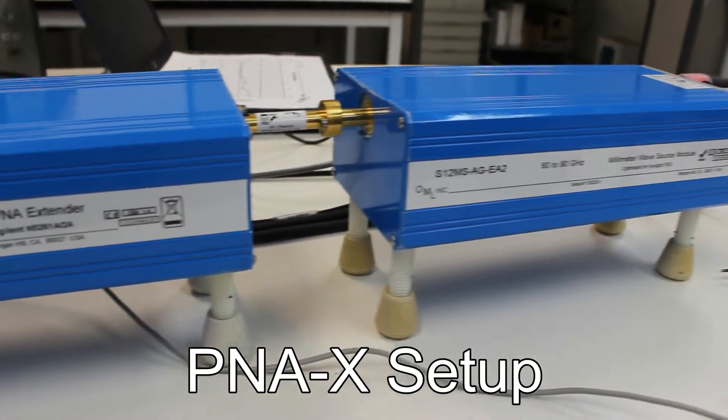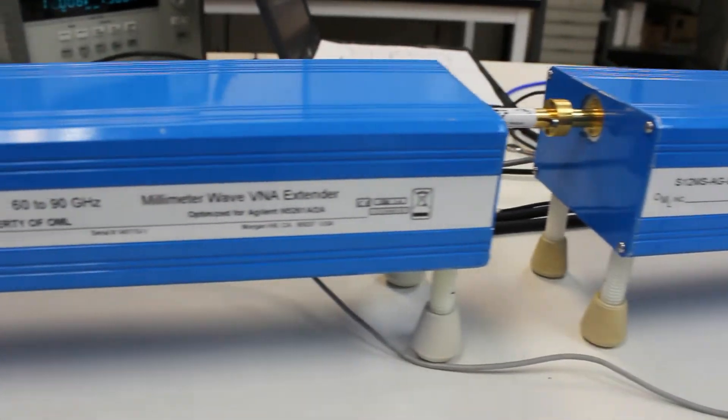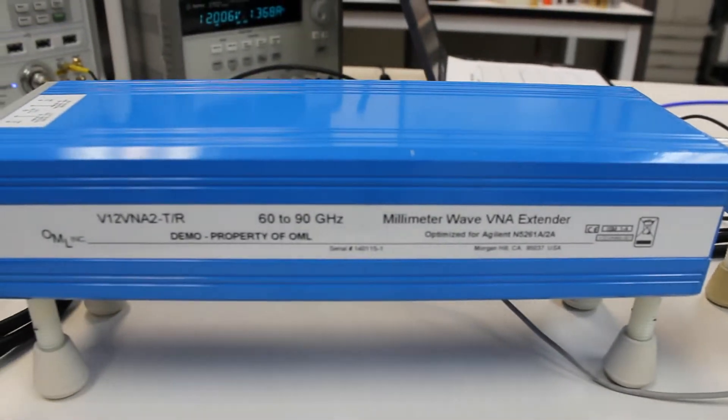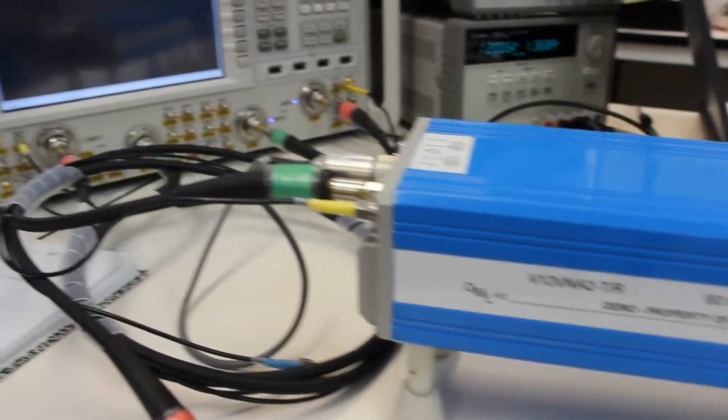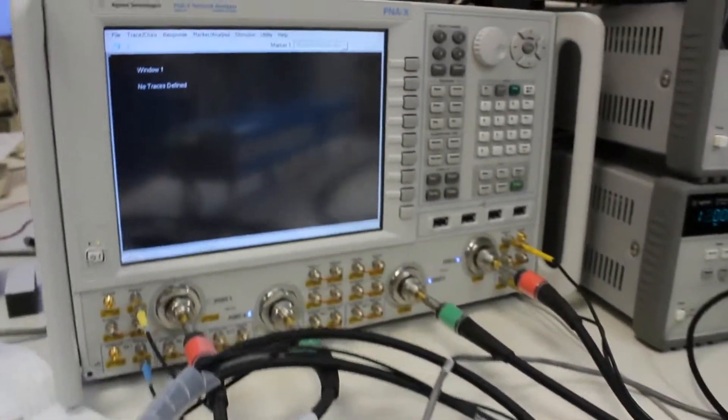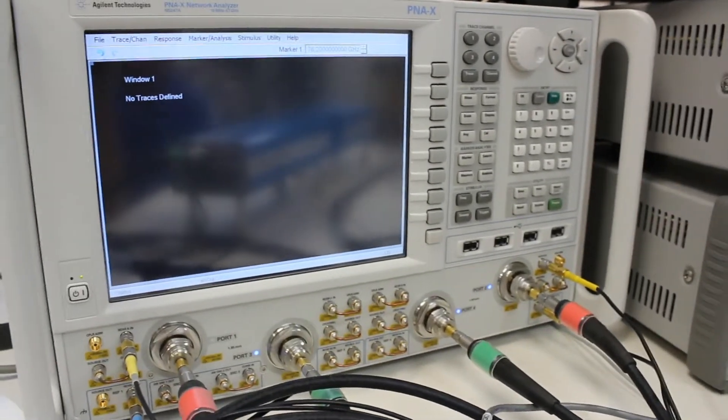This section will show how to set up the PNA-X. The OML TR or T module will connect to port 1, and the source module will connect to port 2. Ensure that the millimeter wave settings are set on your PNA-X.